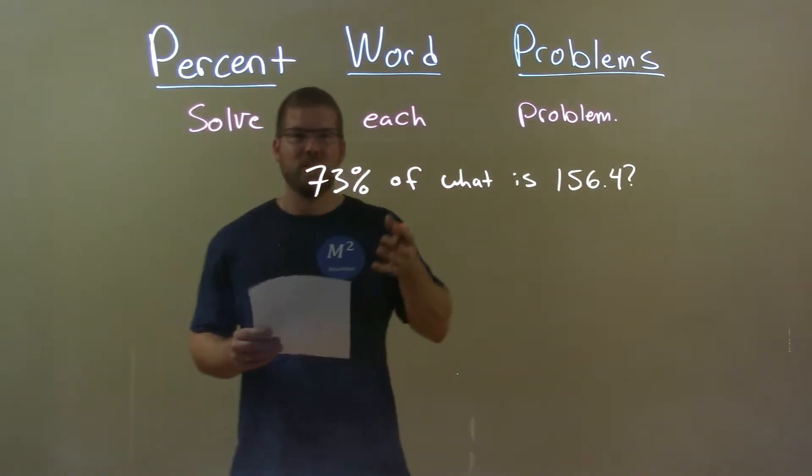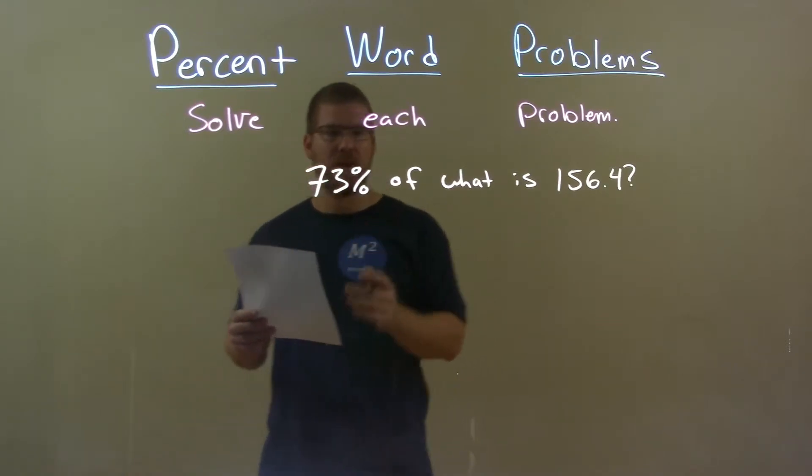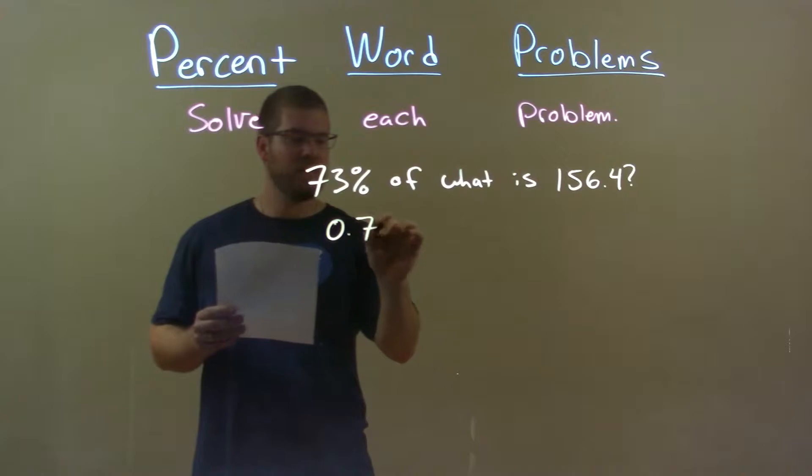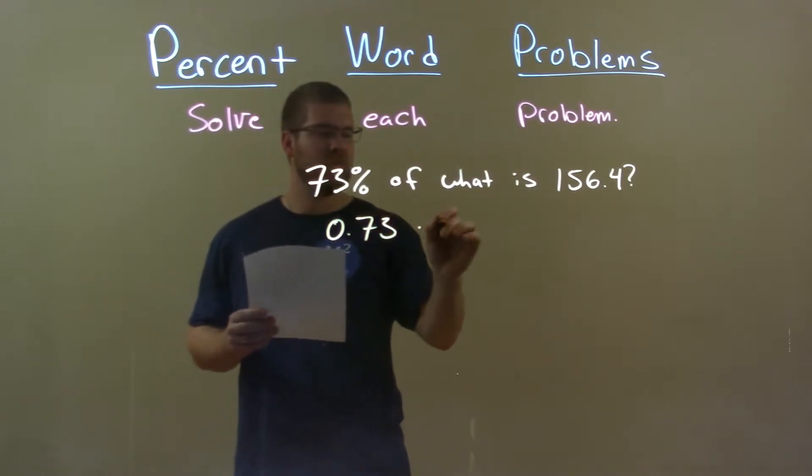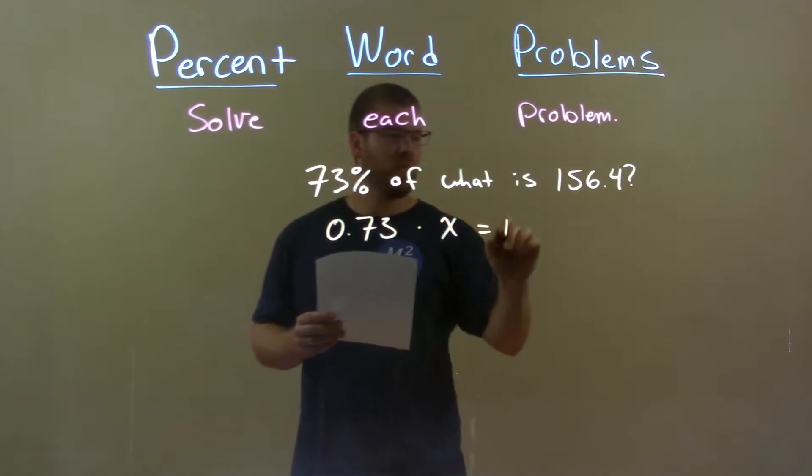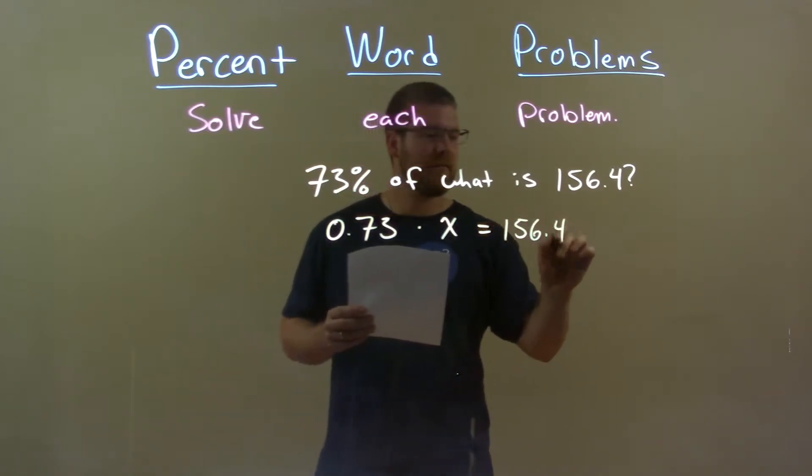Let's write this as an equation first. 73% as a decimal is 0.73, of means multiplication, so 0.73 times x. What we're looking for, the variable x, equals 156.4.